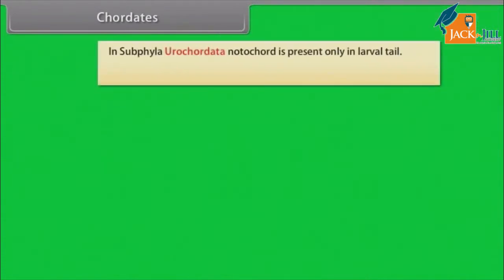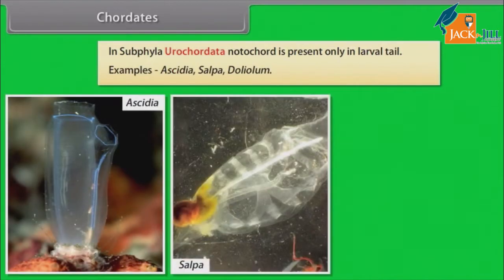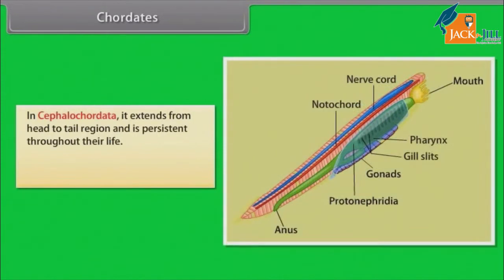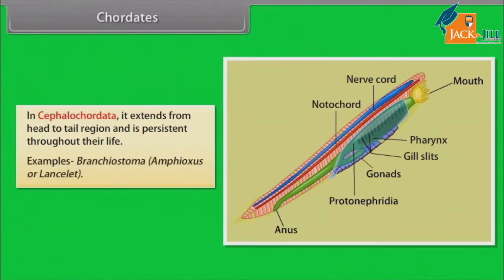In subphylum Urochordata, notochord is present only in the larval tail. Examples: Ascidia, Salpa, Doliolum. In Cephalochordata, it extends from head to tail region and is persistent throughout their life. Examples: Branchiostoma, Amphioxus and Lancelet.